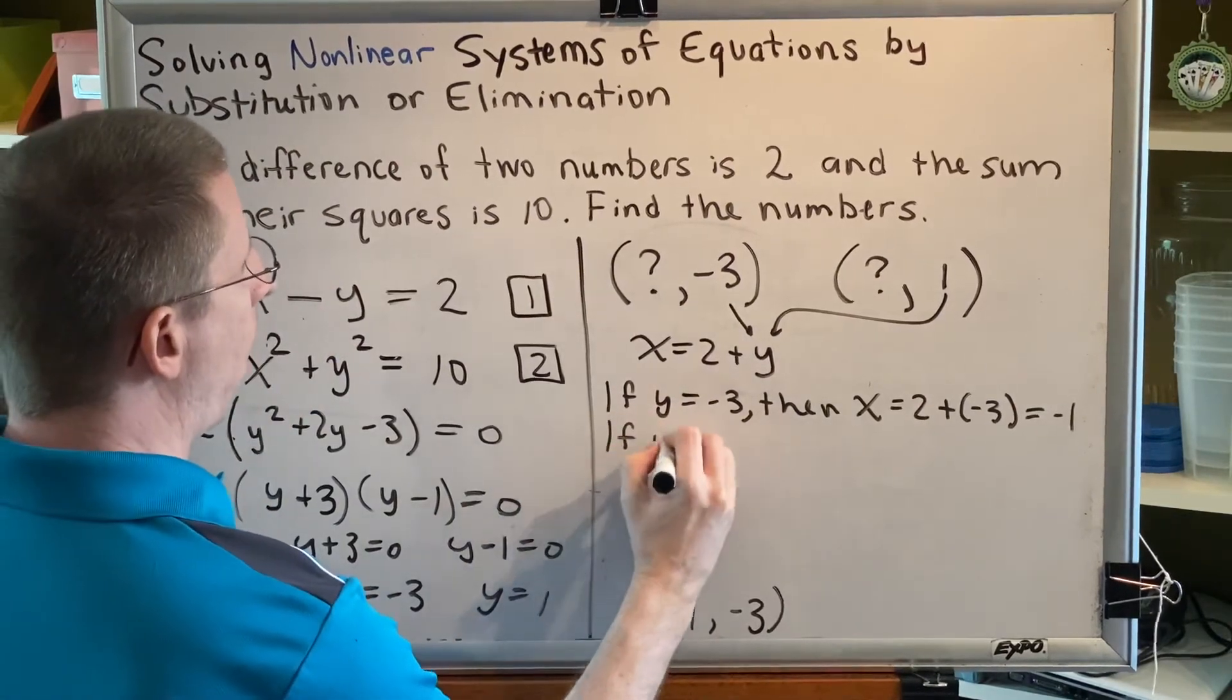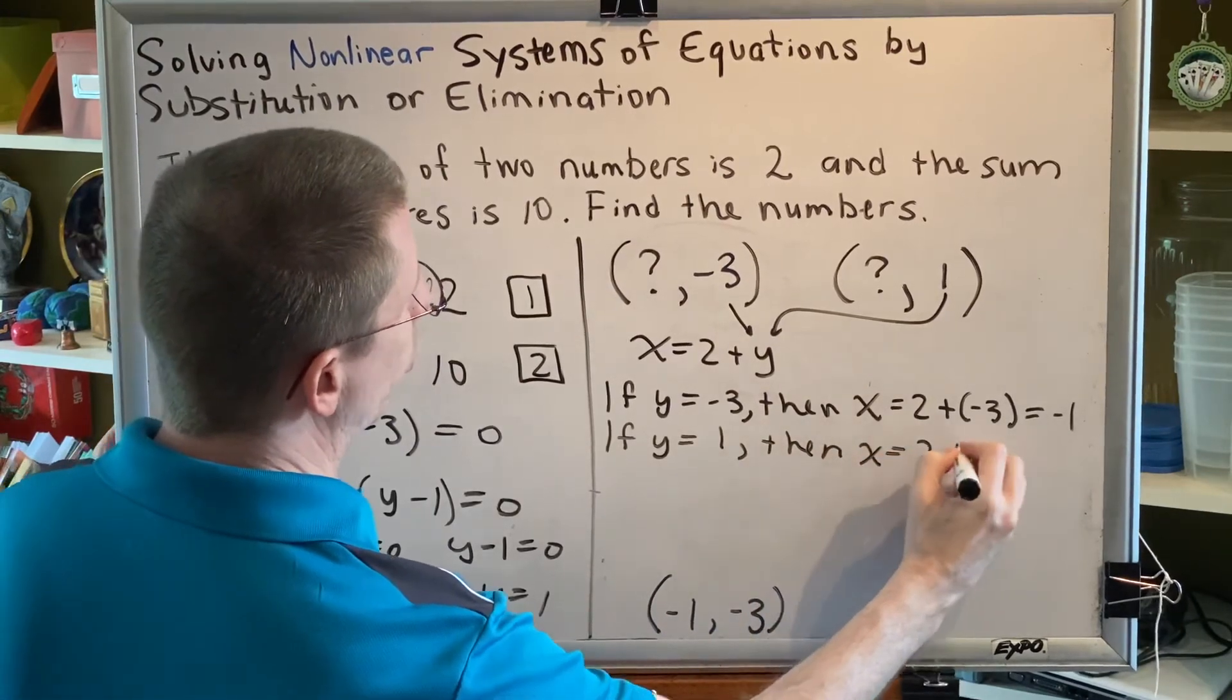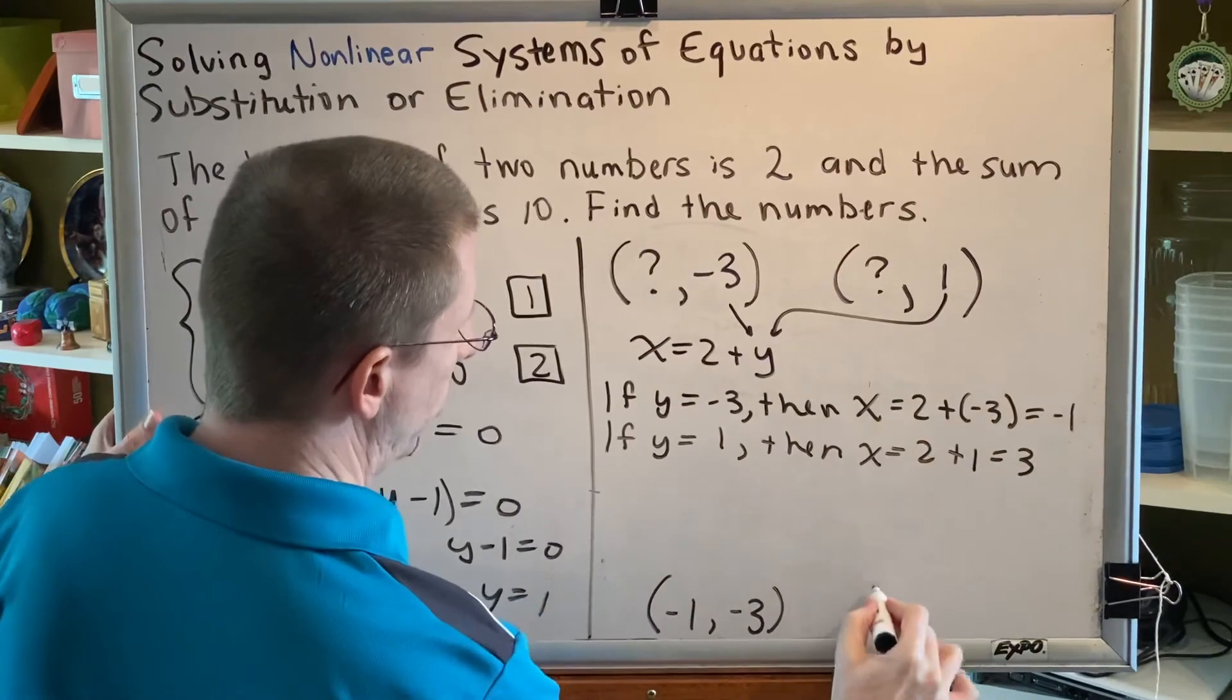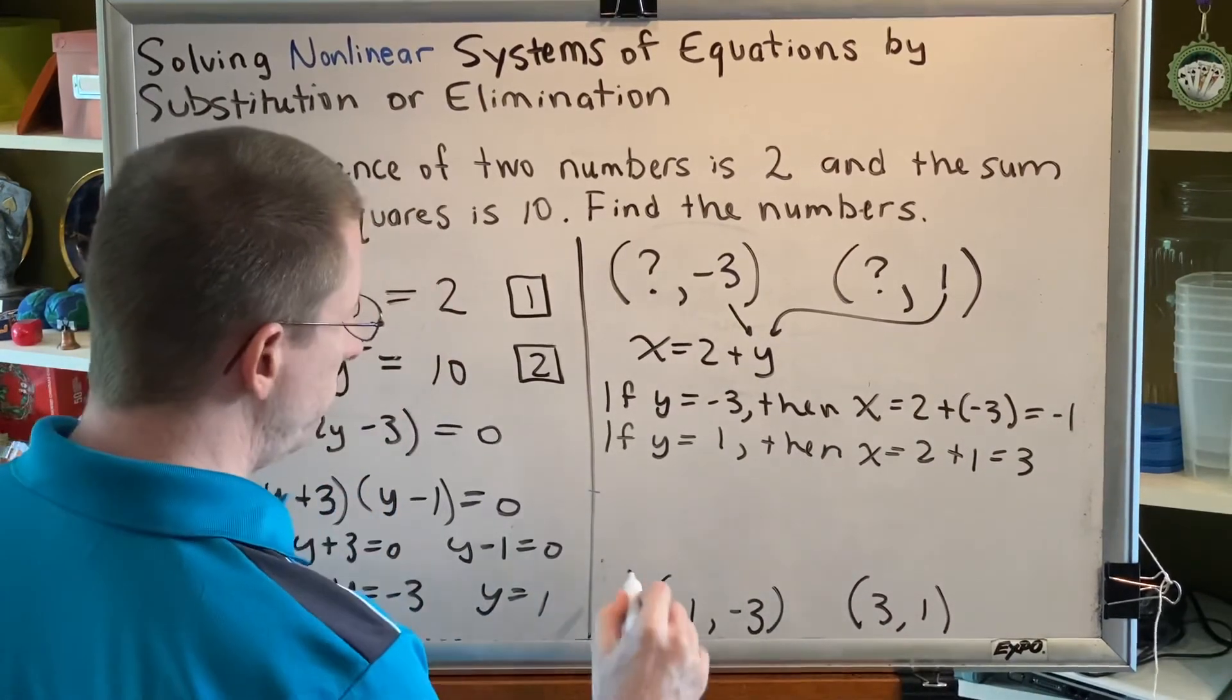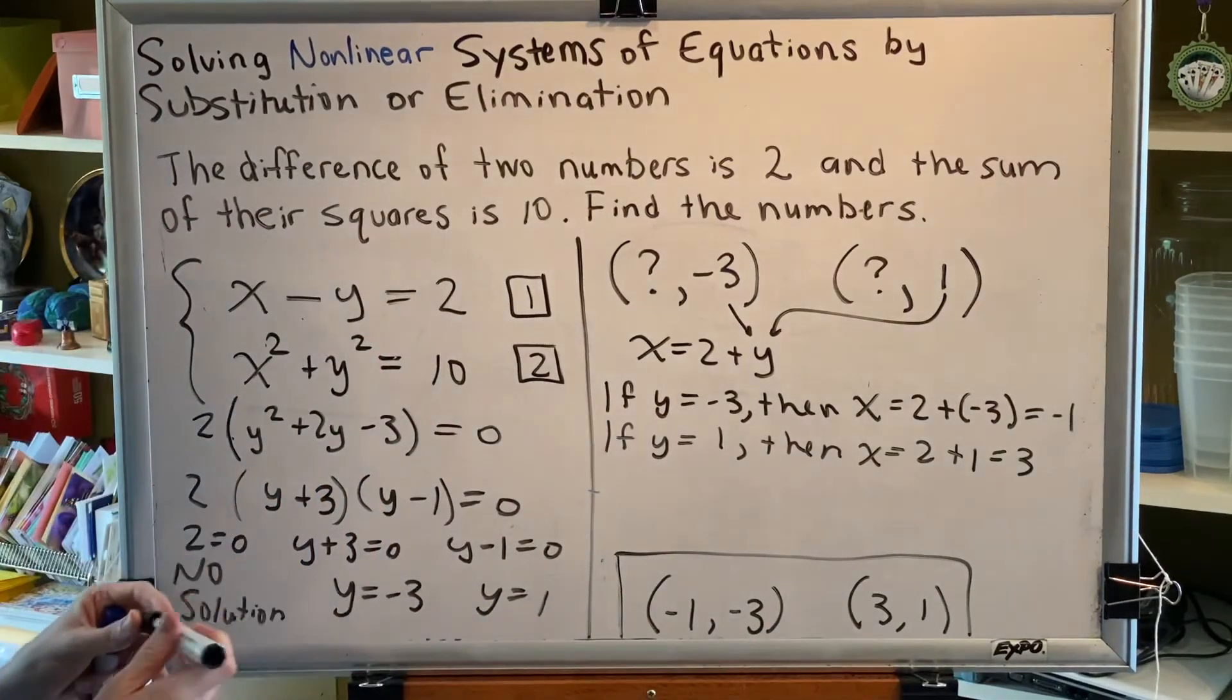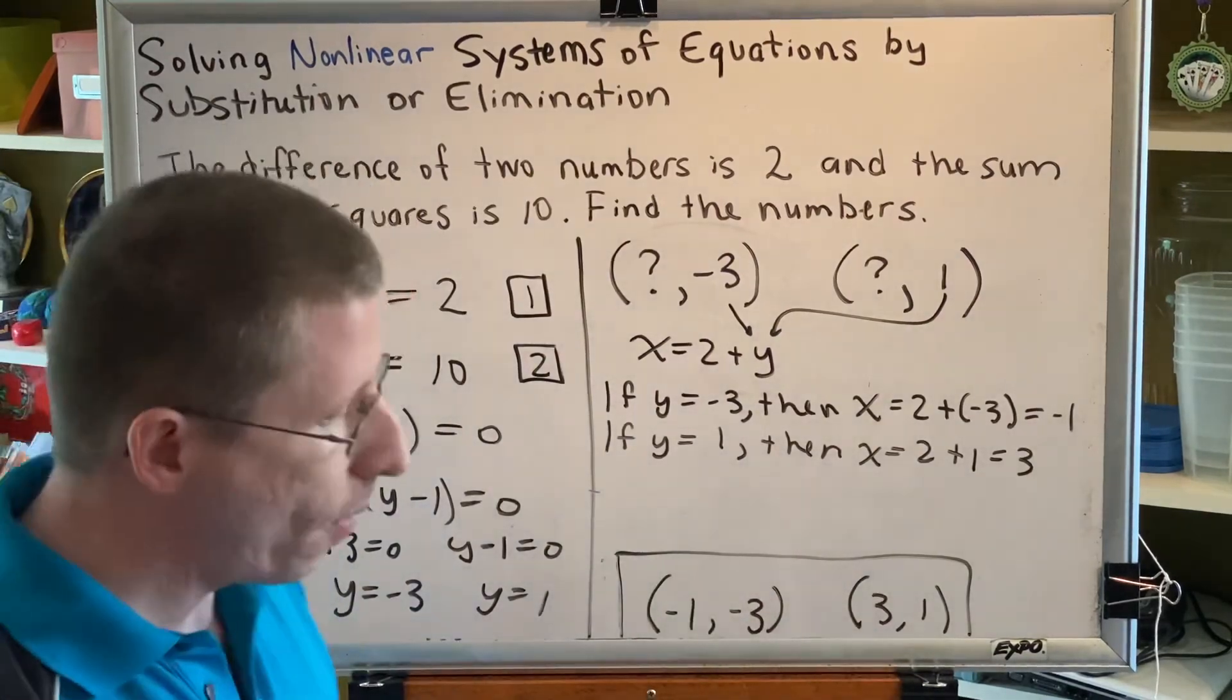If y equals 1, then x equals 2 plus 1, which equals 3. So that tells me the x goes with the other y value. And these are our two potential solutions to this problem. Negative 1, negative 3, and 3 comma 1.